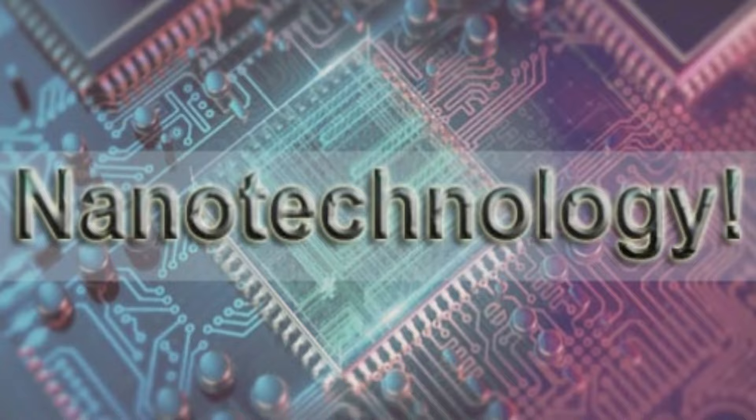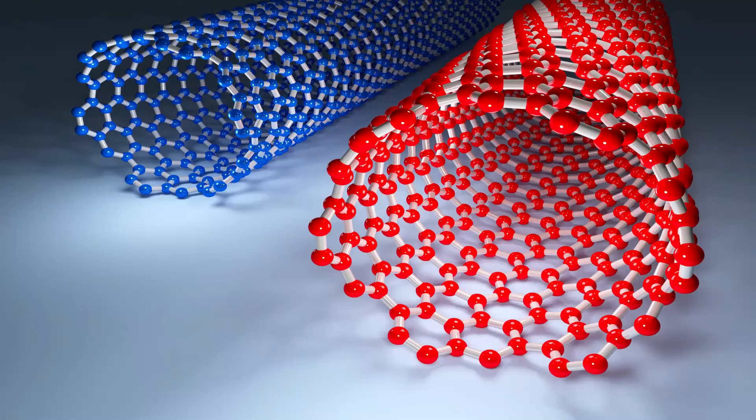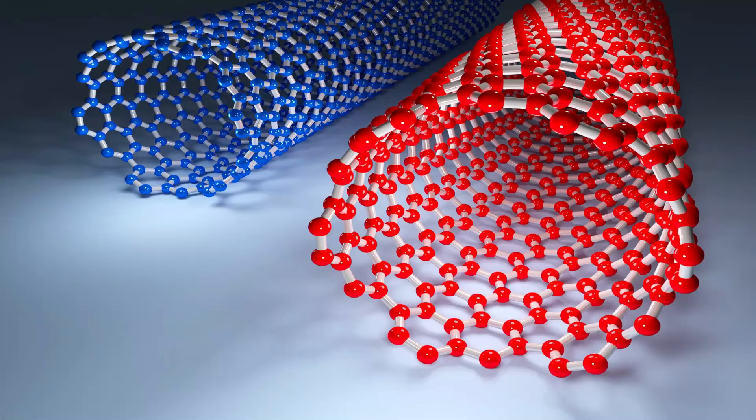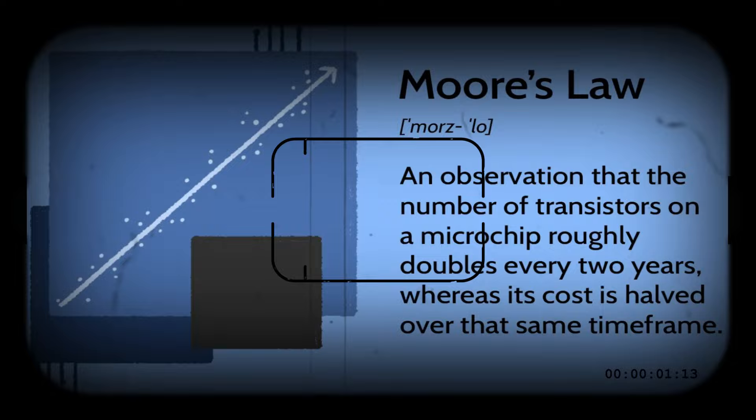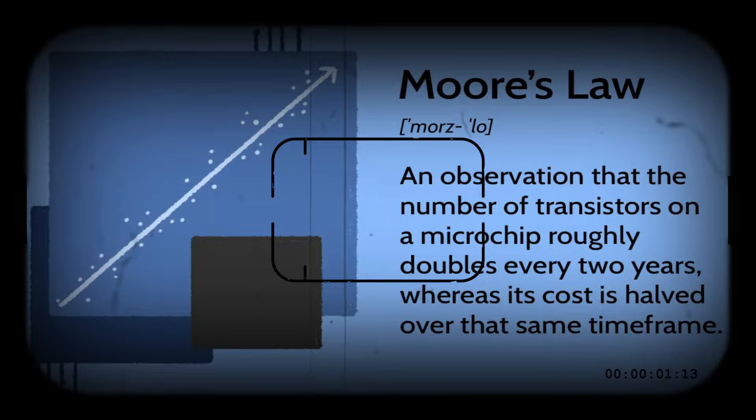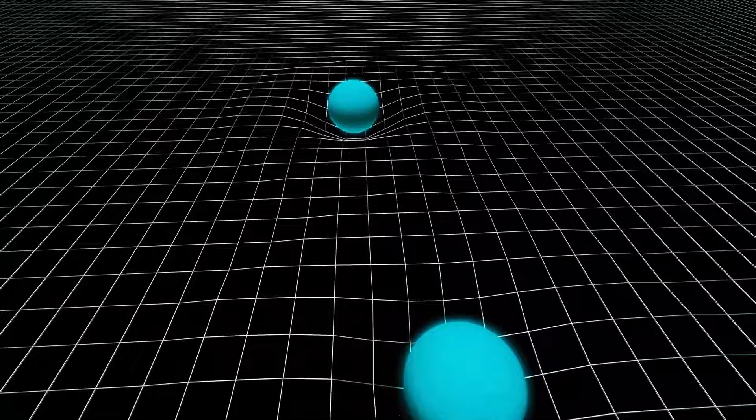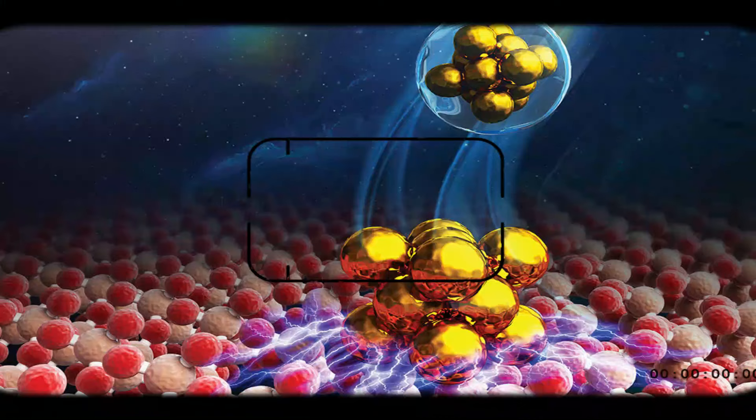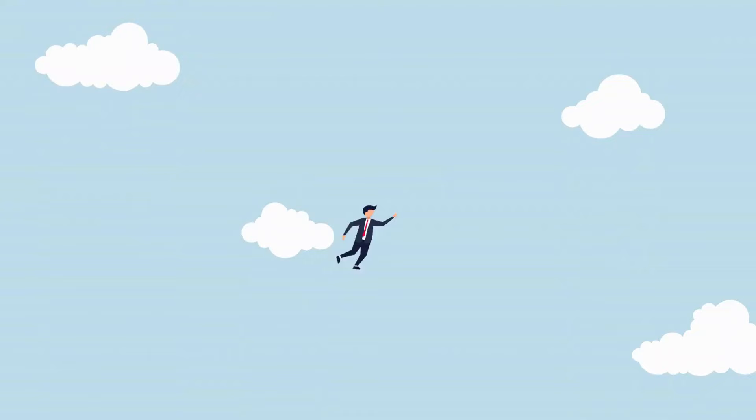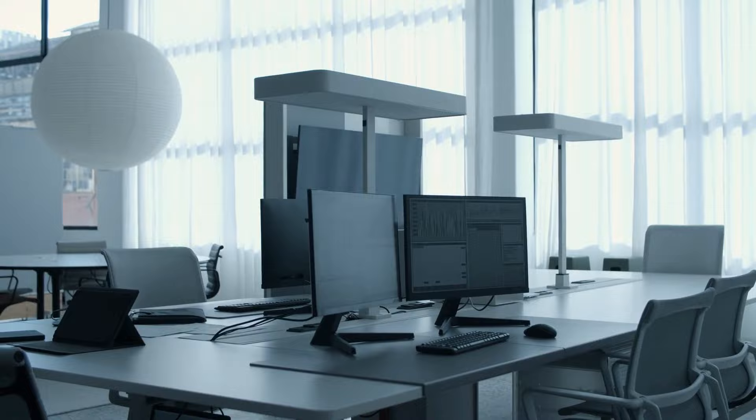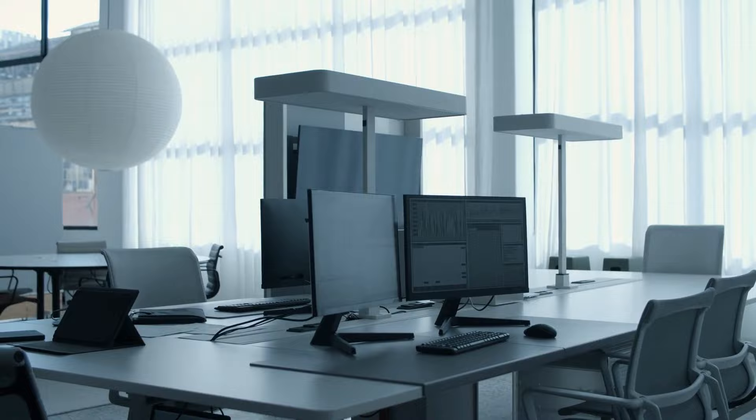3. Nanoelectronics and Quantum Computing. Nanoelectronics is poised to overcome the limitations of traditional silicon-based devices. As transistors continue to shrink, the industry is exploring new materials and technologies, such as carbon nanotubes and two-dimensional materials, to maintain Moore's Law and improve computing power. Quantum computing, made possible by manipulating quantum states at the nanoscale, holds the potential to solve complex problems currently beyond classical computers' capabilities, from simulating molecular interactions to optimizing complex logistics.